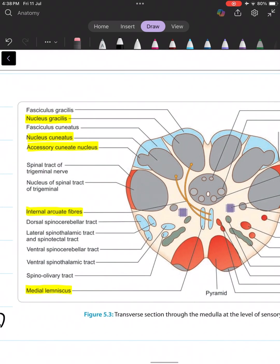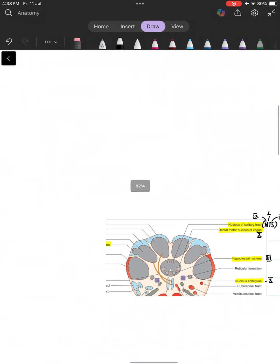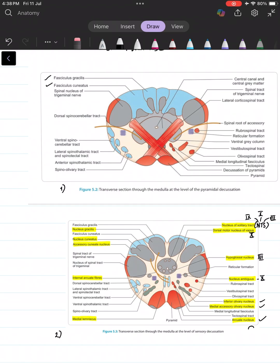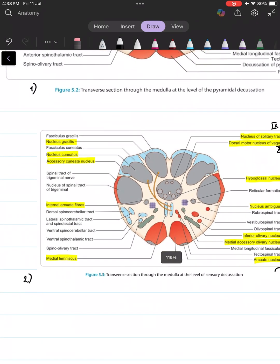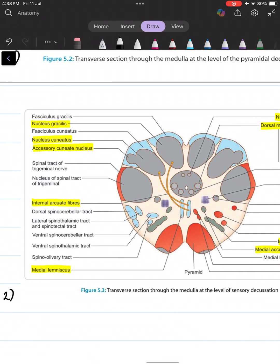And what's happening here? You remember the gracile fasciculus and the cuneate fasciculus? Those were tracts, right? Now those tracts are terminating in their respective nuclei: the nucleus gracilis and the nucleus cuneatus.